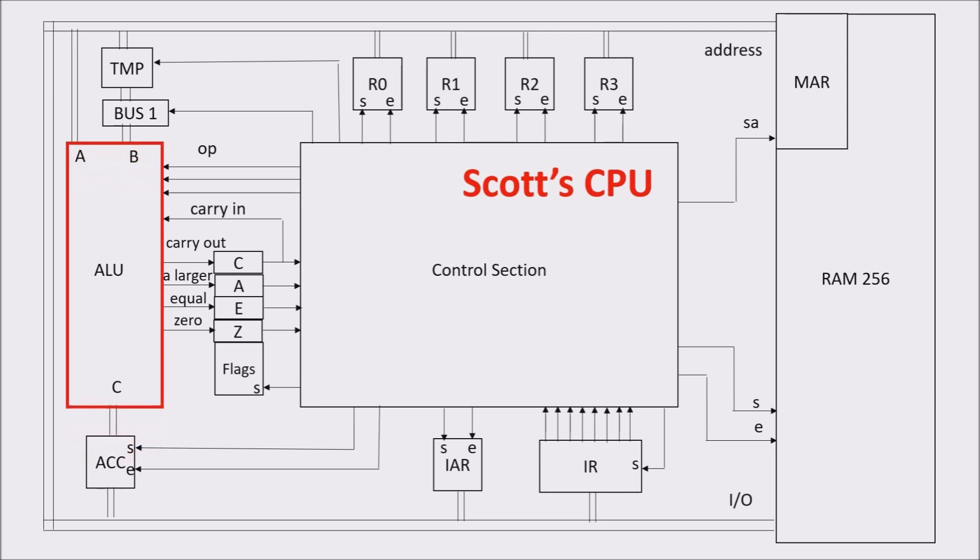The ALU has as input the op lines, the carry-in, and the A and B inputs coming from the bus. It has as output the C output connected to the bus through the ACC register, the carry out, A larger, equal, and zero, which we'll see later. The fundamental purpose of the ALU is executing the arithmetic and logic operations required from the instruction decoded from the control section. The control section communicates the required operation to the ALU through the op lines.